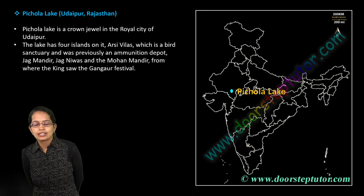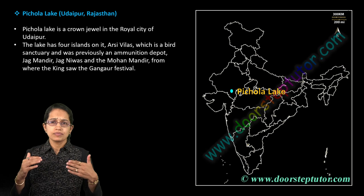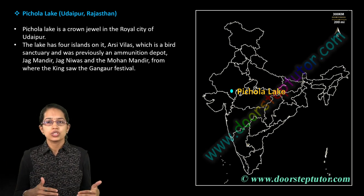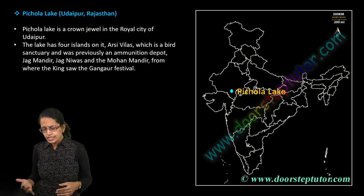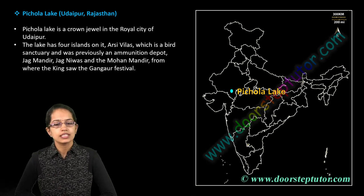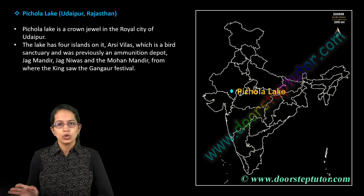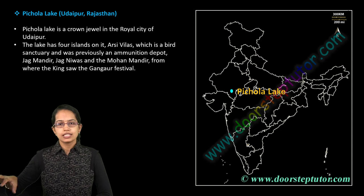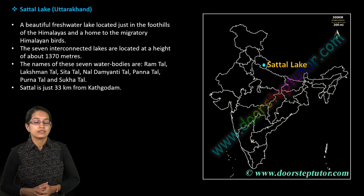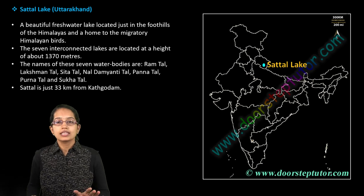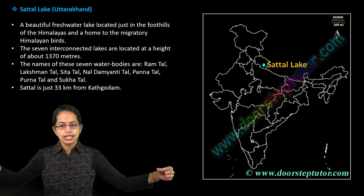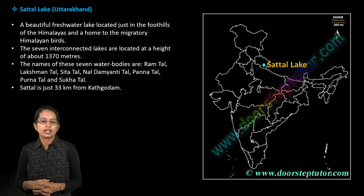In Udaipur you have Pichola Lake, which has four different islands. One is Arsi Villa, which was initially an ammunition port and is now a heritage site. The other three islands are Jagmandir, Jagniwas, and Mohan Mandir. Mohan Mandir is the place from where the king used to watch the Gangaur festival in previous years.